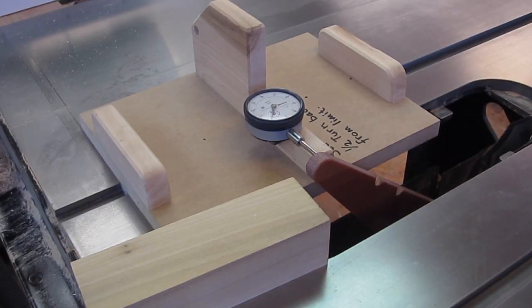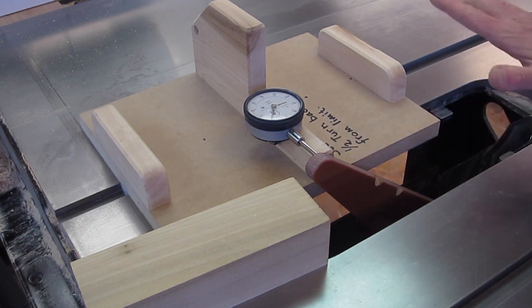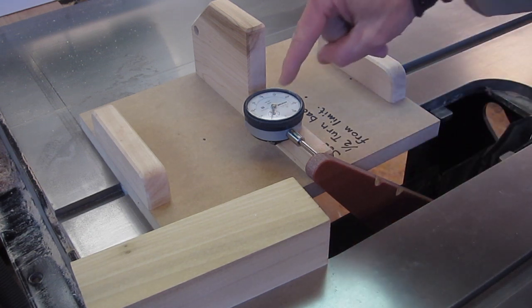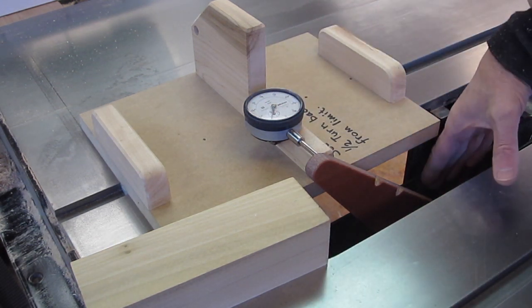This measurement with the carriage at the minimum height is another situation where the arm is a great advantage over the blade because the blade would be below the table and you would not be able to measure it with a standard dial indicator. You'd have to buy a special vertical dial indicator.